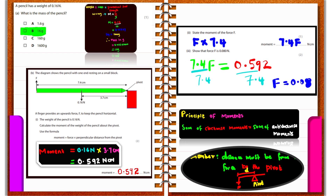The principle of moments states that the sum of clockwise moments about a point should equal the sum of anticlockwise moments about the same point — in that case, the system is at equilibrium or balanced. Remember, the distance must be measured from where the force is acting to the pivot when working out these calculations.